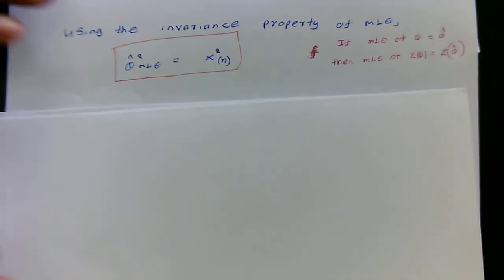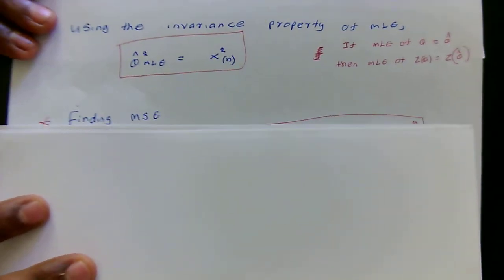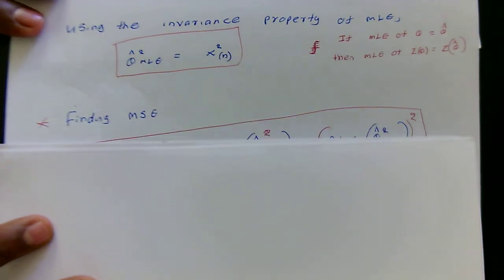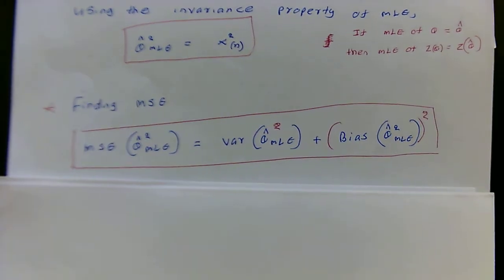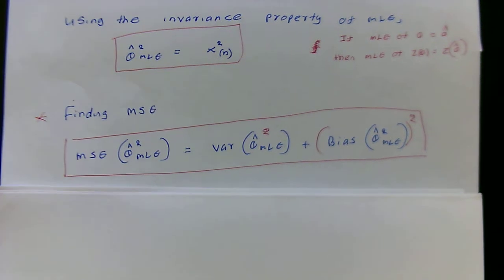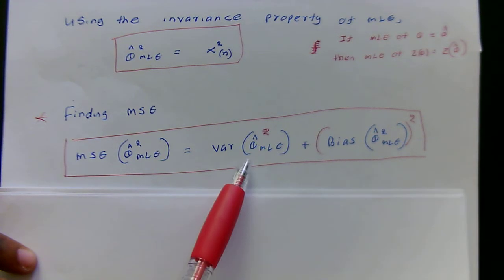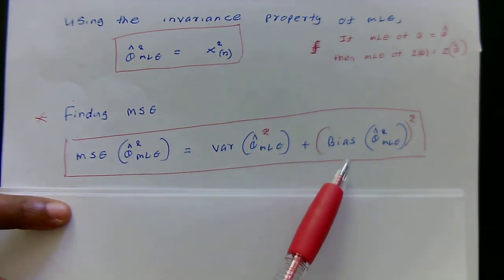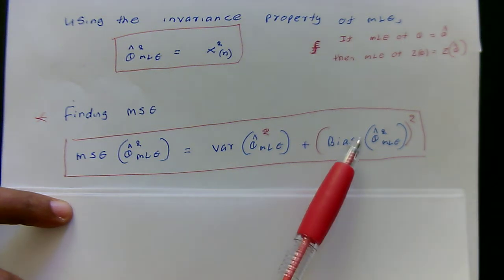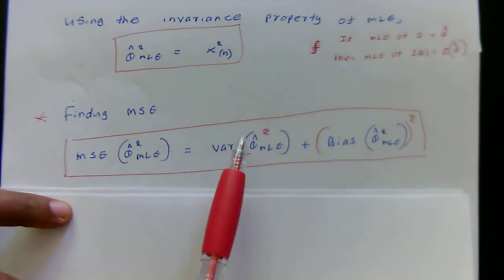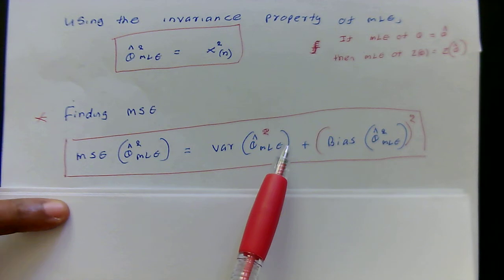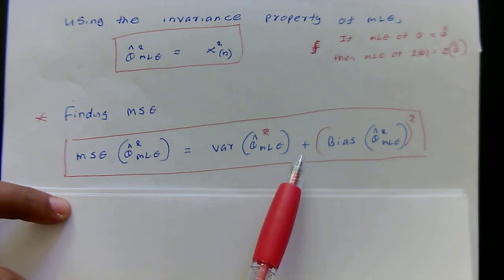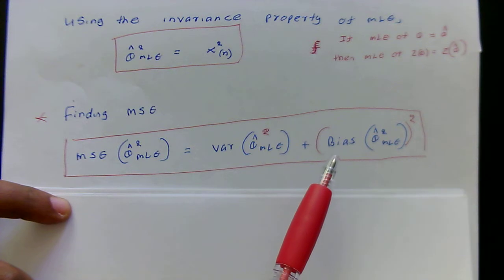Now let's find the MSE of this estimator. As shown in my previous video, the MSE of an estimator equals the variance of that estimator plus the squared bias. I will find these two parts separately. Before doing that, I will find the probability density function of the largest order statistic, as that is the easiest approach.